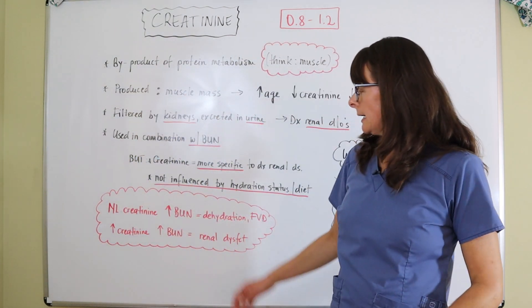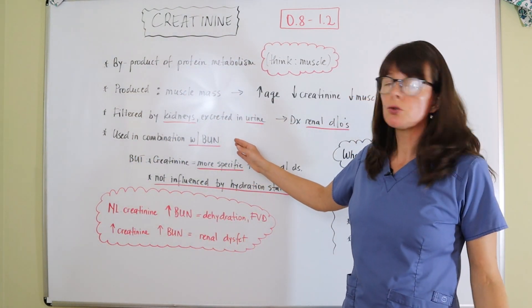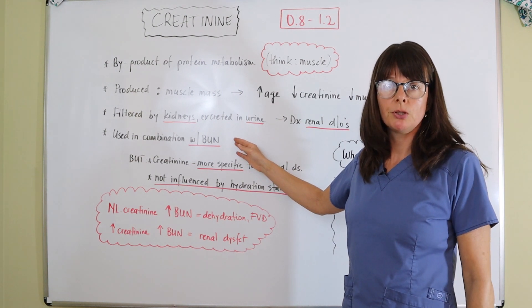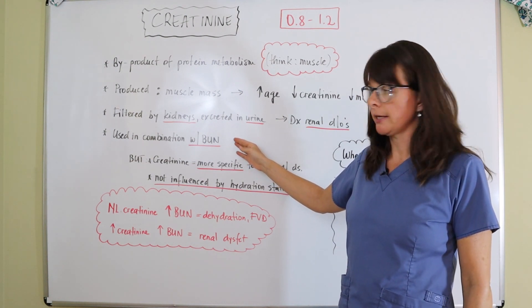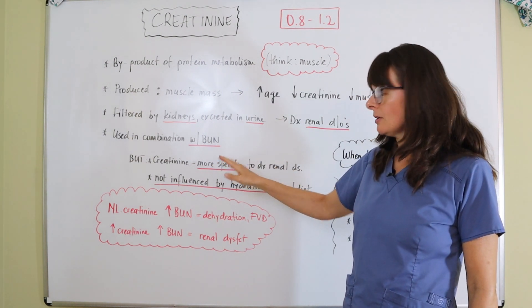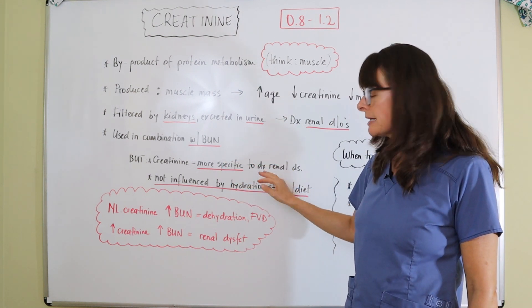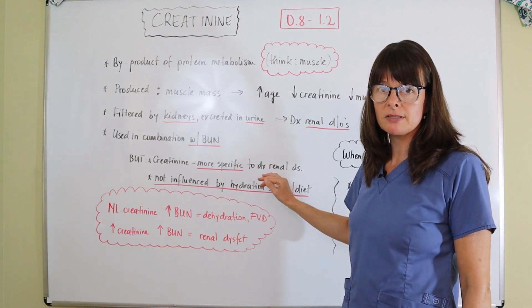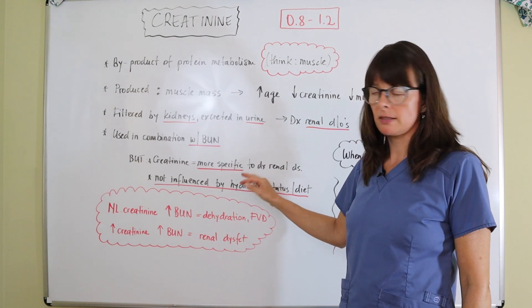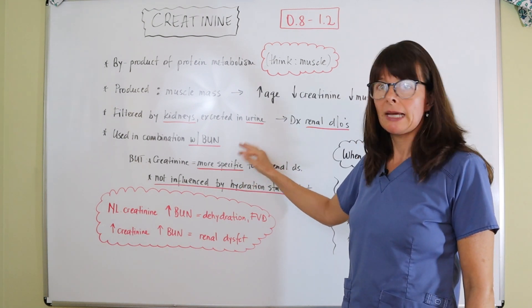It's usually used in combination with BUN, blood urea nitrogen, but the creatinine value itself is more specific to diagnosing renal disease. The reason is that the level of the BUN can be influenced by the patient's hydration status, by their fluid volume status.